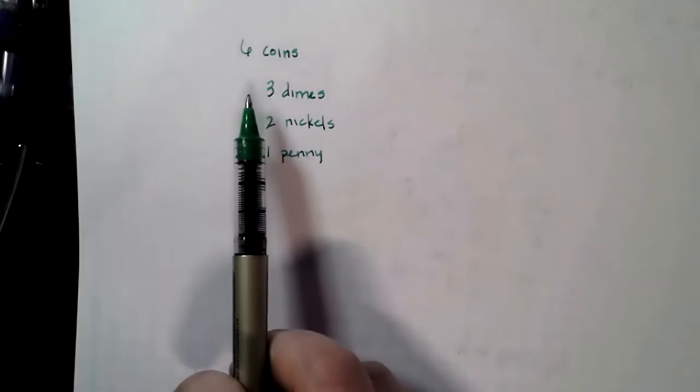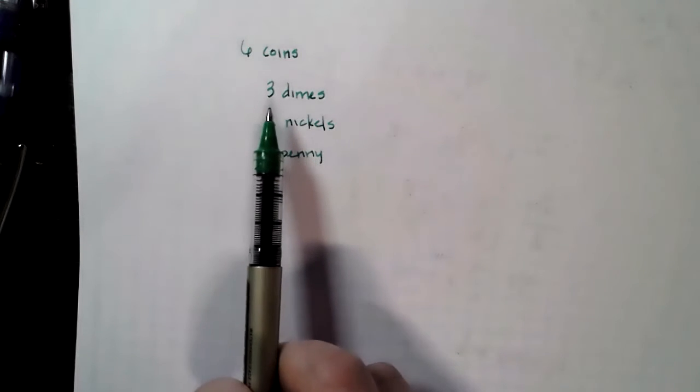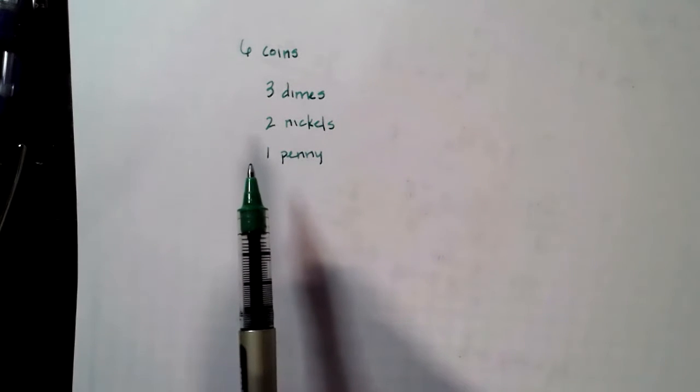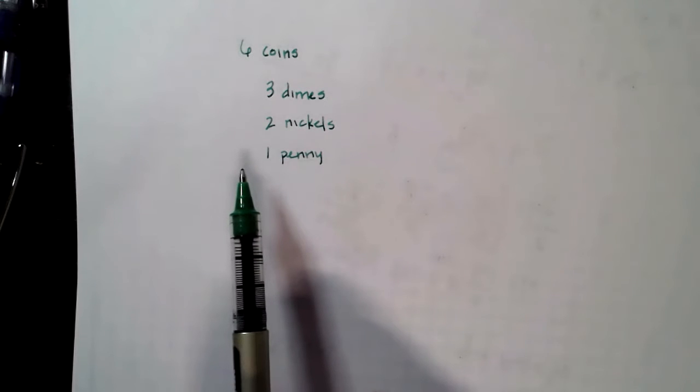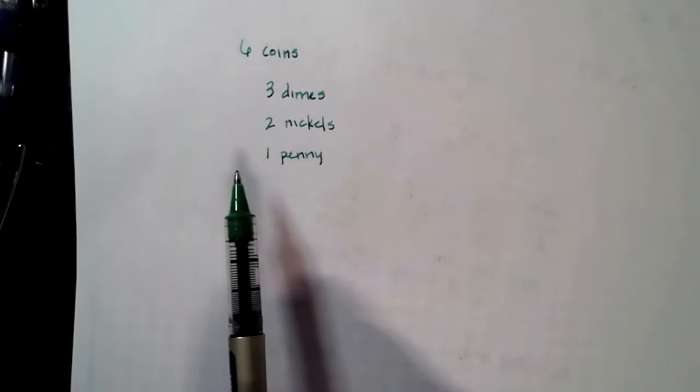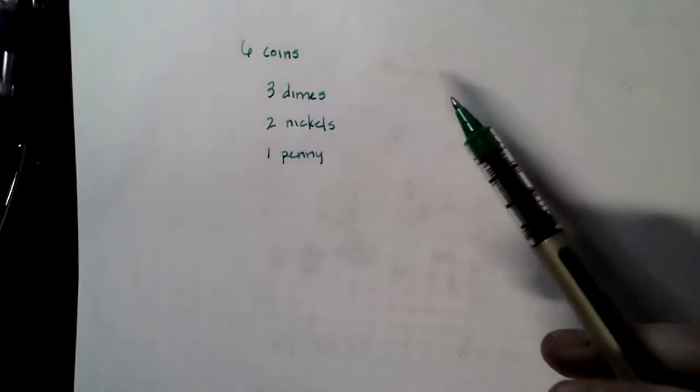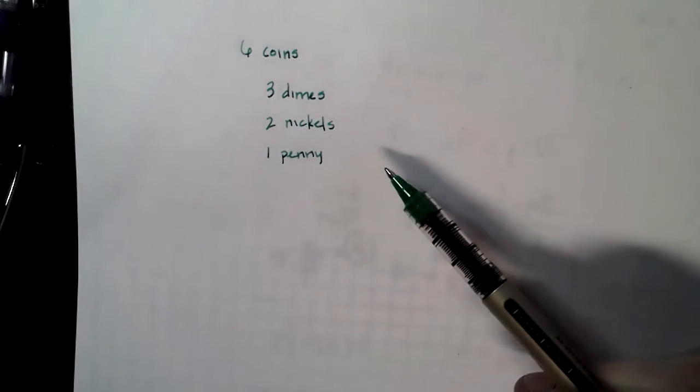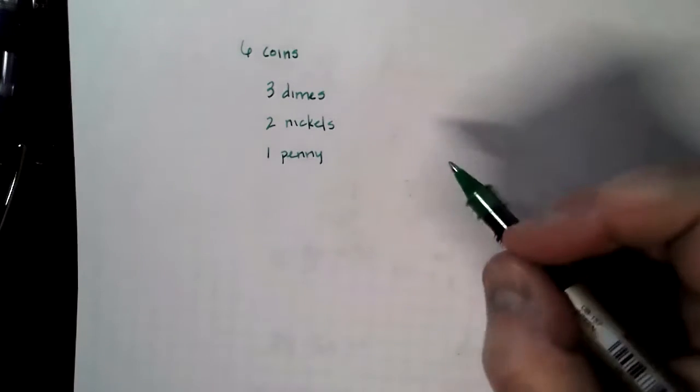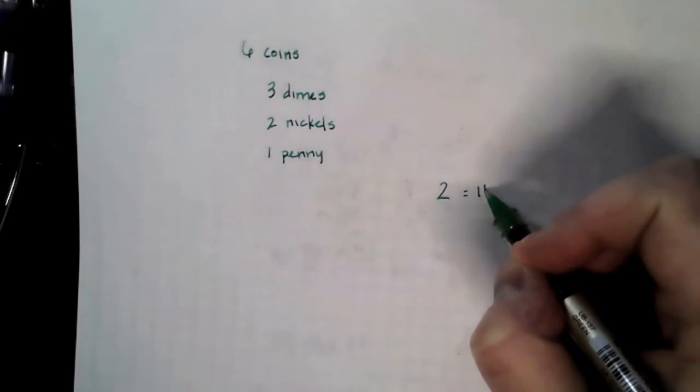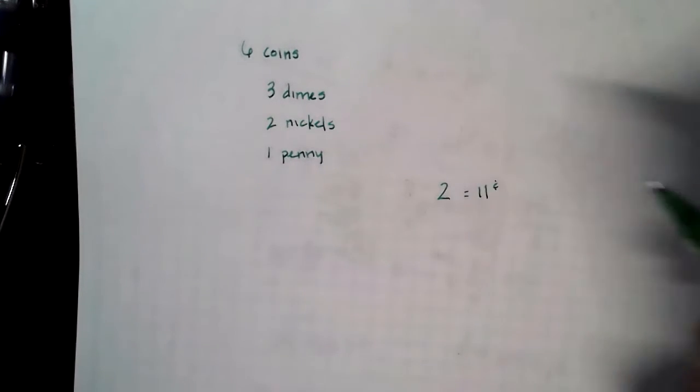The setup is we've got six coins in our pocket: three dimes, two nickels, one penny. What is the probability that we reach in, pull two coins, and we have 11 cents, which would be one dime, one penny? Two coins, 11 cents, one dime, one penny.